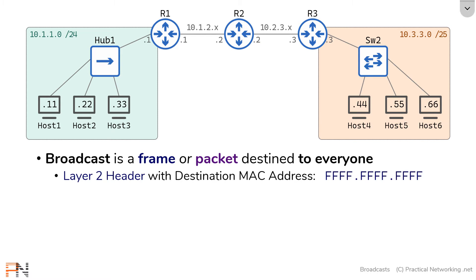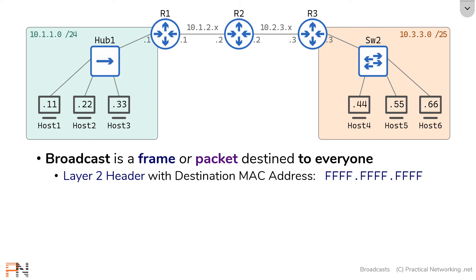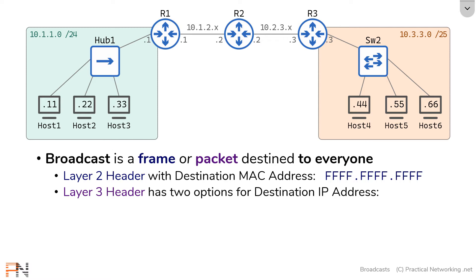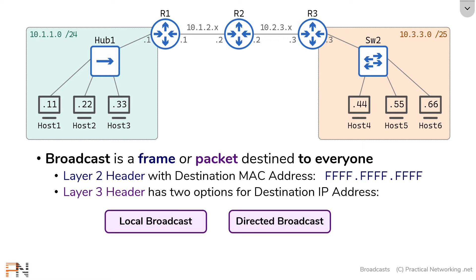At layer 2, a broadcast is simply any frame with a layer 2 header that includes a destination MAC address of all Fs. This is a specially reserved MAC address that indicates this frame should be sent to everybody on the local network. A layer 3 broadcast is the same in that it uses a specially reserved IP address as the destination, except at layer 3 we have two different options: the local broadcast and the directed broadcast.